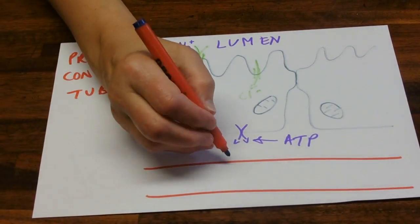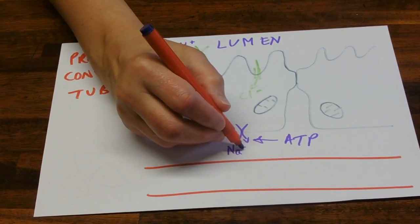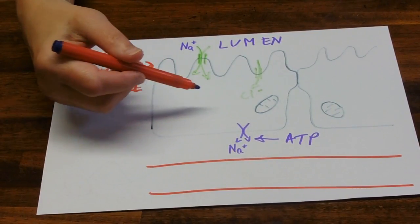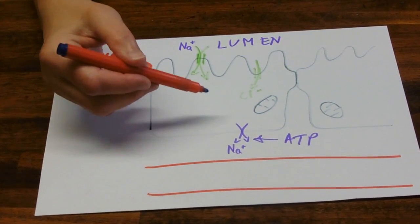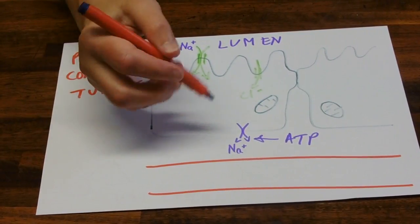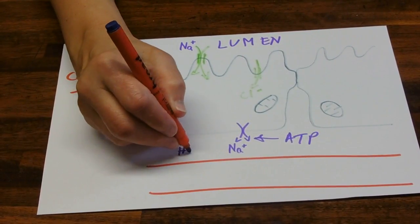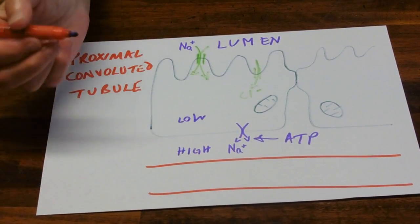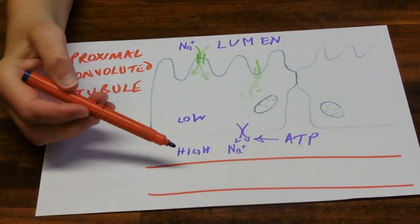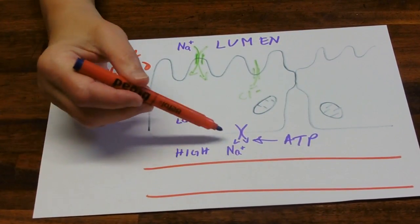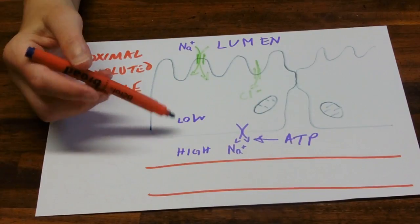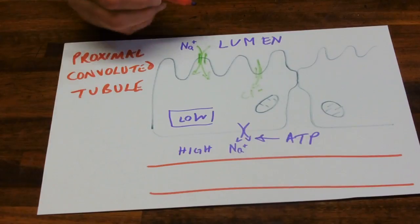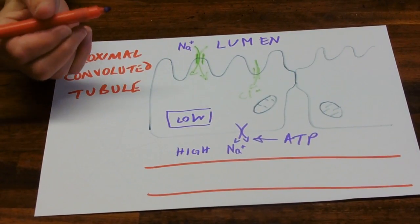Now sodium ions are then actively transported out of the other side, so that you've always got a concentration gradient. So you want a low concentration in here, so we've got high concentration out there, low in here of sodium ions. So we actively transport the sodium ions out into their high concentration, maintaining that low concentration so that they'll diffuse through, dragging with them the glucose and amino acids.